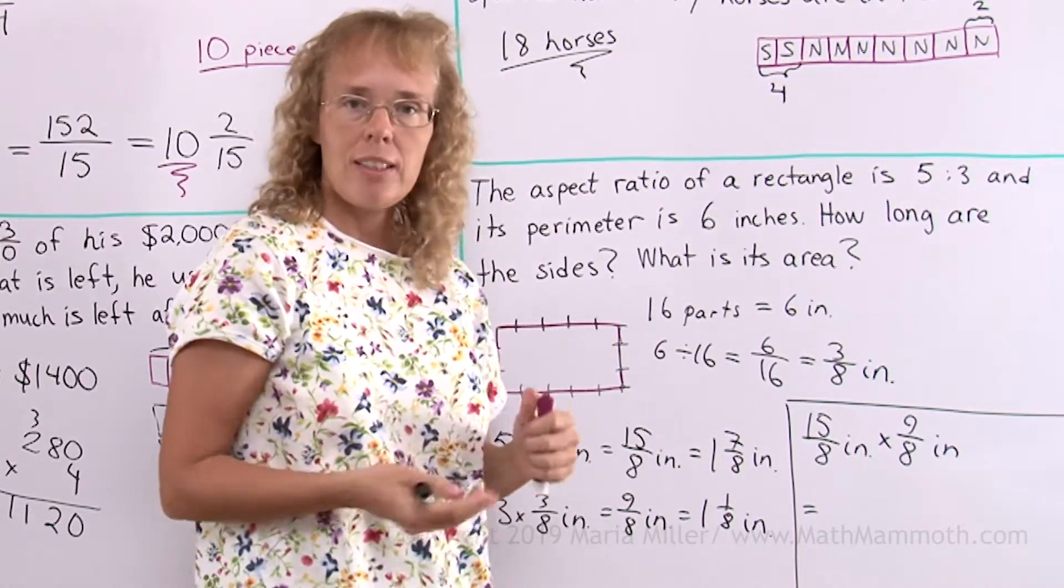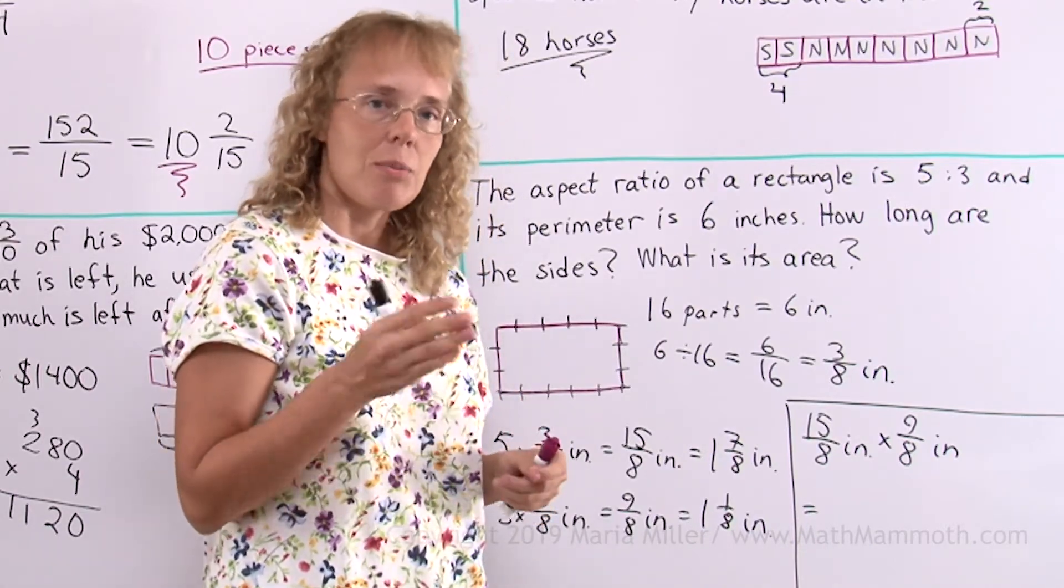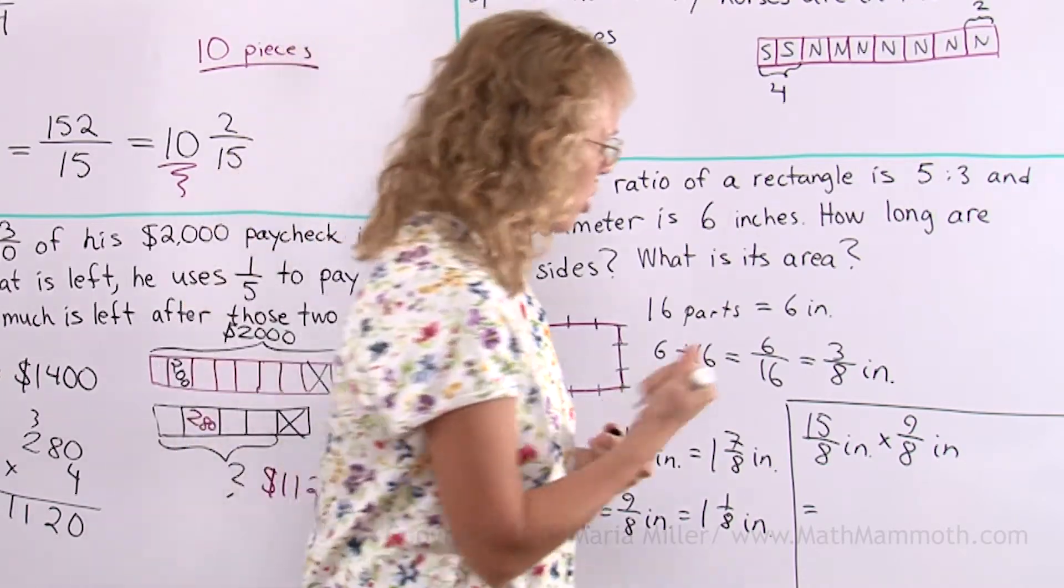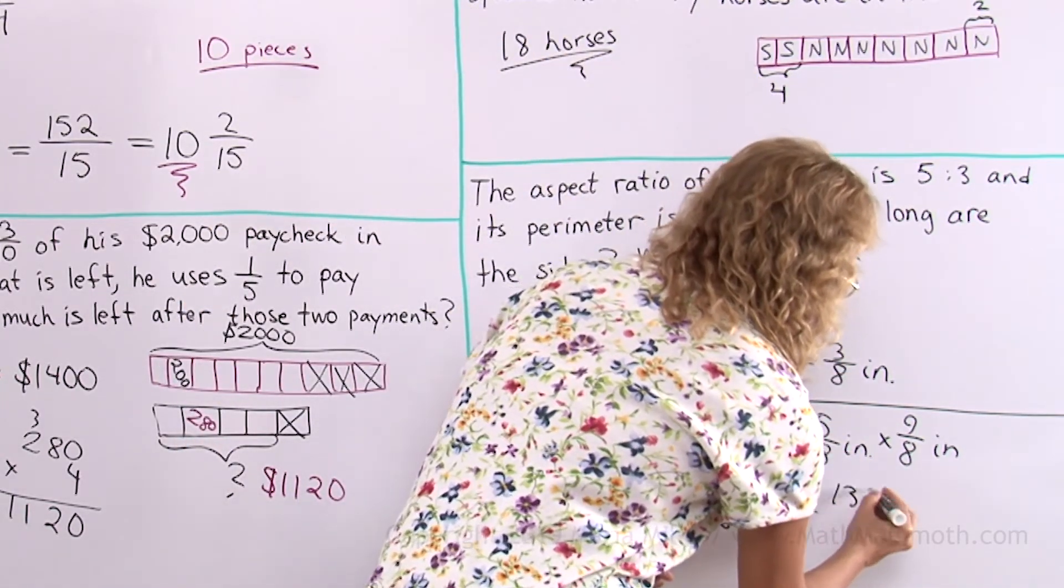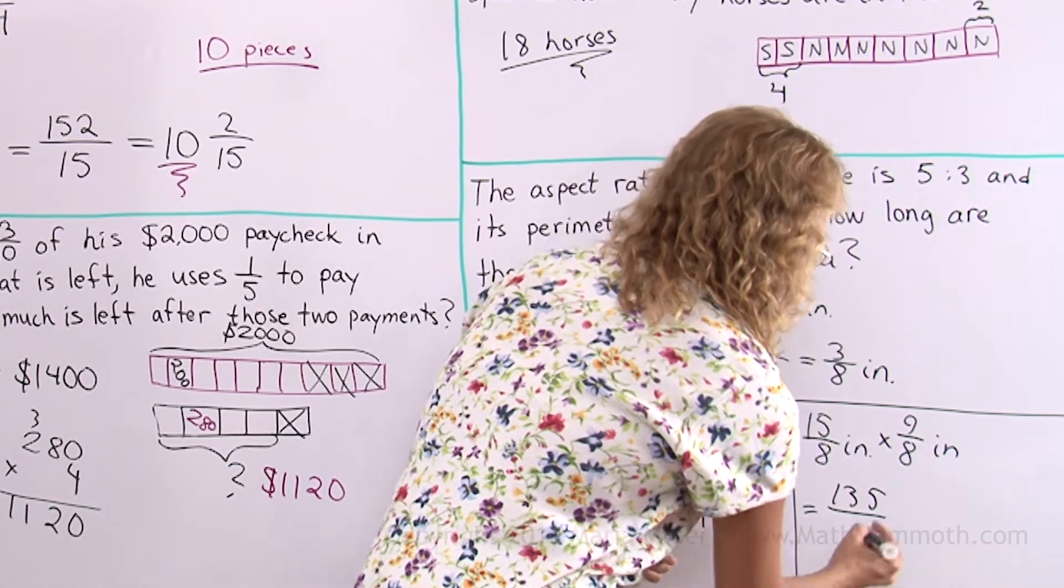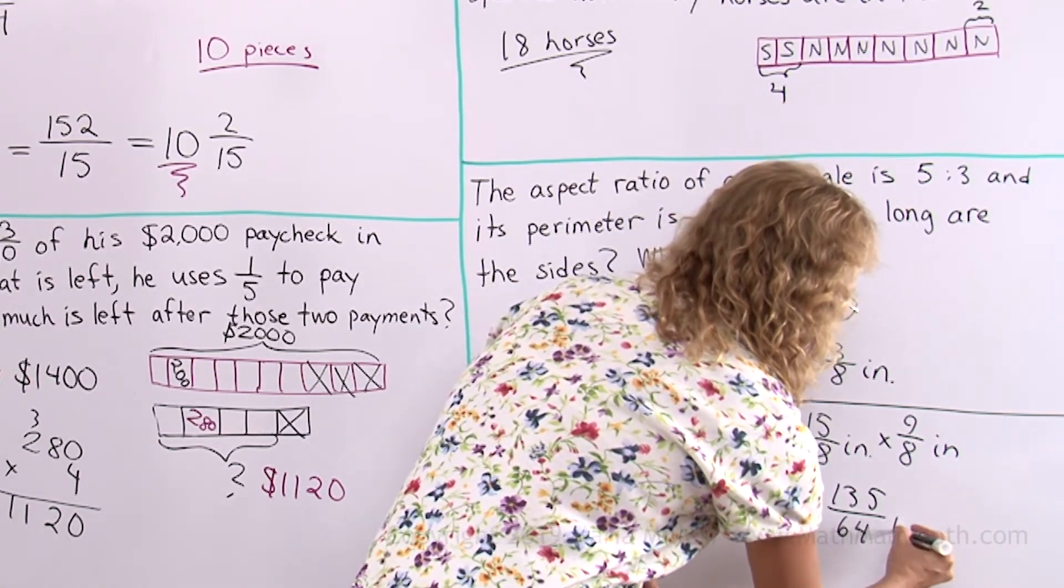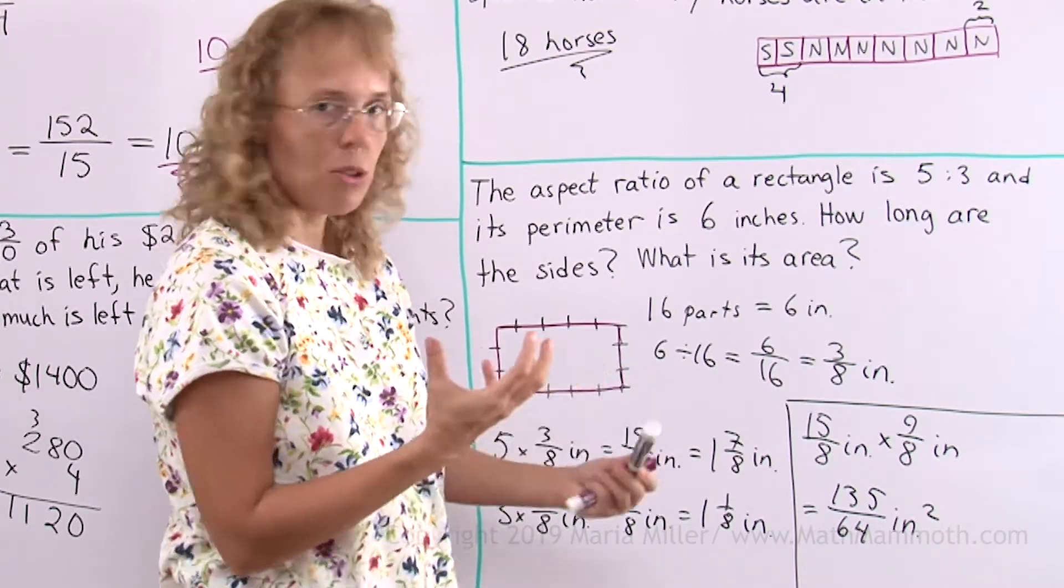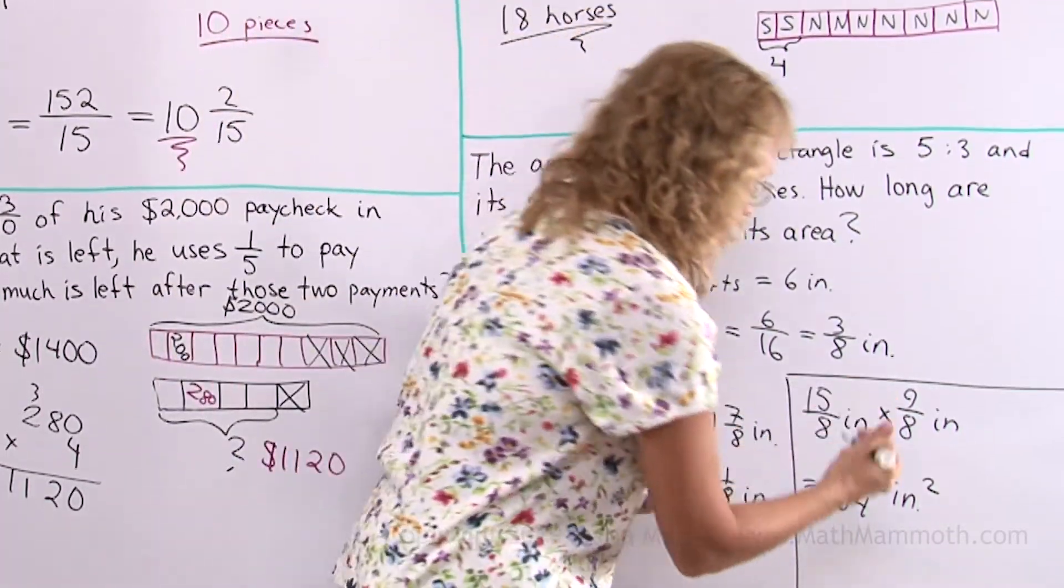15 times 9 or 9 times 15. 9 times 10 is 90. 9 times 5, 45. So in total 135. And then 8 times 8, 64. And now this is square inches. Then just this needs to go into a mixed number. And we are all done.